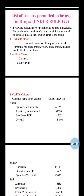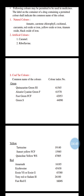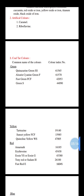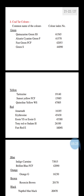For coal tar colors, the common name and color index number are provided. Under the green category: Quinacrine Green SS (Color Index 61565), Alphazurine Cyanine Green F (Color Index 61570), Fast Green FCF (Color Index 42053), and Green S (Color Index 44090). These are the common coal tar colors under the green category.